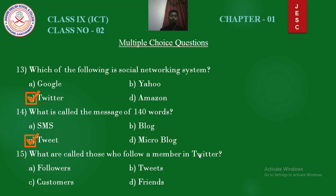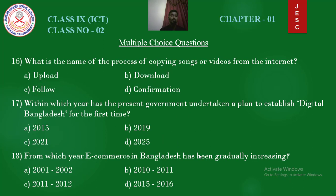Question number 15: What are those who follow a member on Twitter called? Options: followers, tweets, customers, friends. Answer is followers. Question number 16: What is the name of the process of copying songs or videos from the internet? Options: upload, download, follow, confirmation. Answer is download.